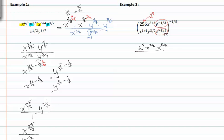And in the denominator, I have x to the one-fourth, y to the three-halves, and y to the positive one-third. Remember that this is all raised to the negative one-eighth.